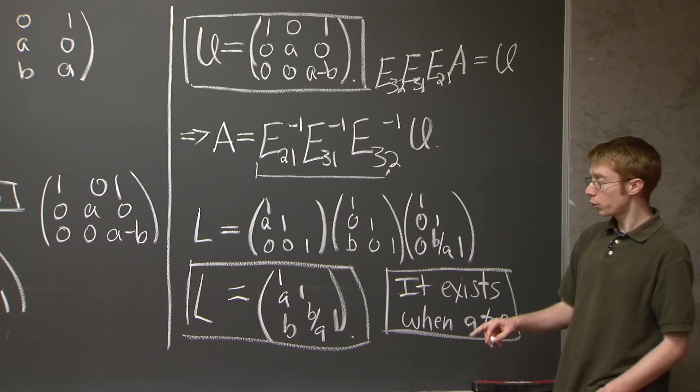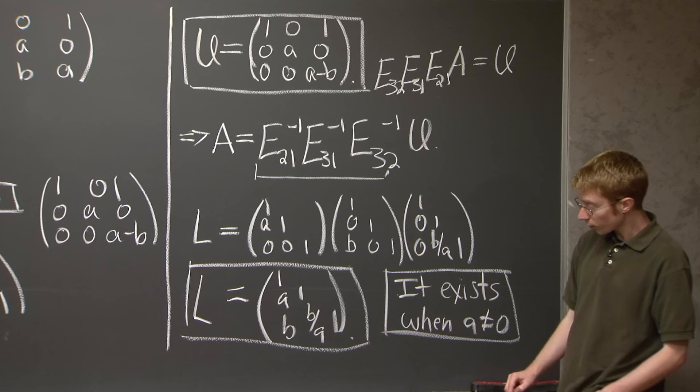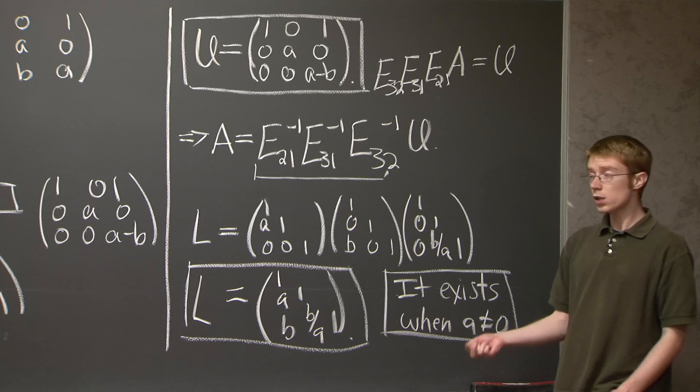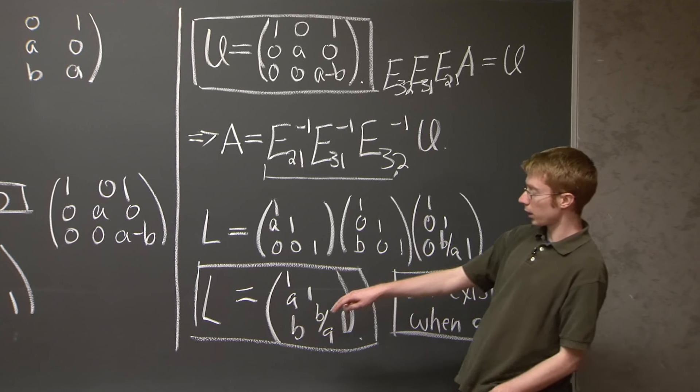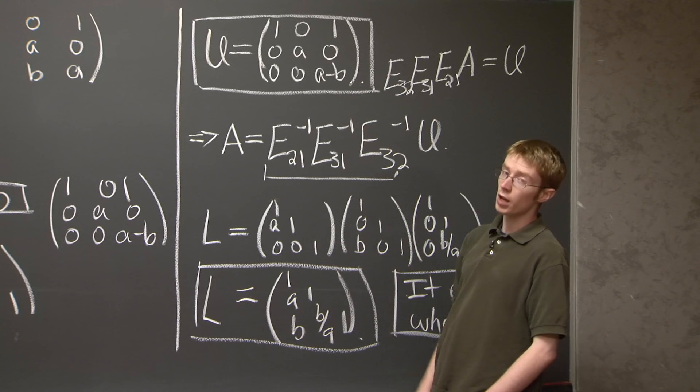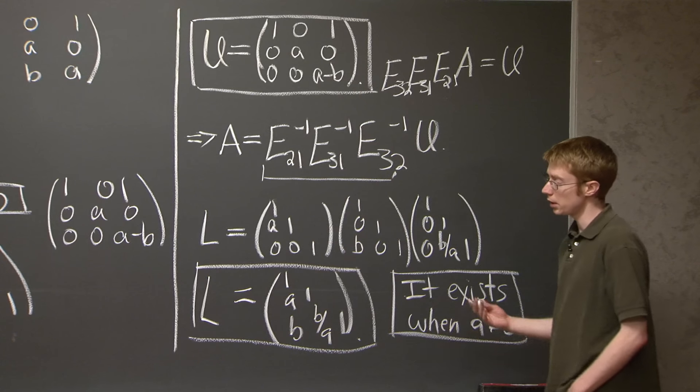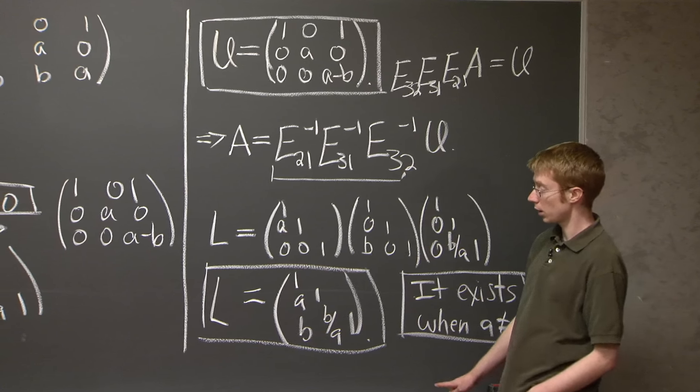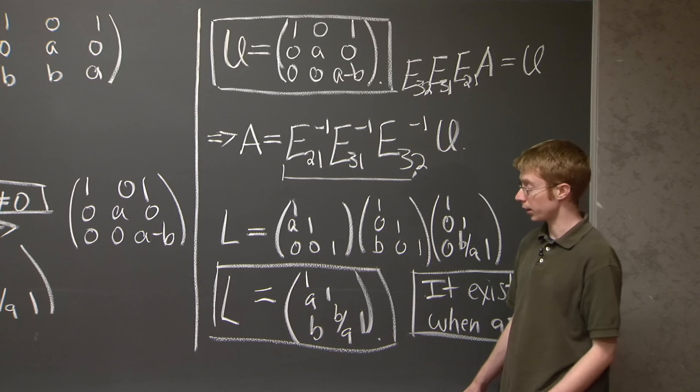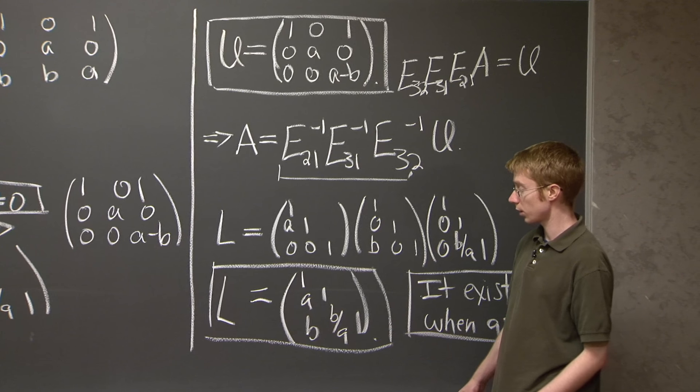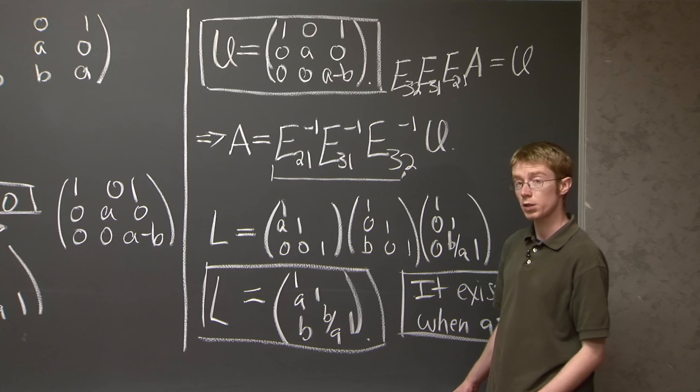two comments. First, always check your work. Always go back and multiply L times U, and make sure it's A. Because it's easy to screw up the elimination process, and it's easy to check your work. So you should go back and make sure things are as they should be.